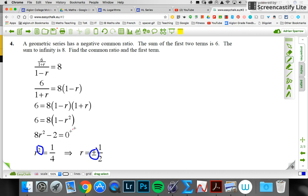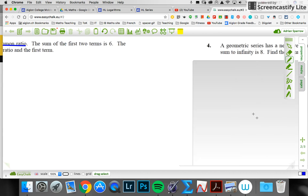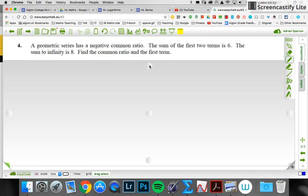Now I'm going to go back and refresh my memory from the question. A geometric series has a negative common ratio, so it's not plus a half, it's minus a half. So r is minus a half.